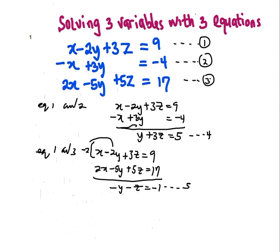Combining both equation 4 and equation 5 together now. Equation 4: y plus 3z equals 5. Negative y negative z equals negative 1. Adding these two equations together gives 2z equals 4. Dividing both sides by 2, my z is going to be 2.